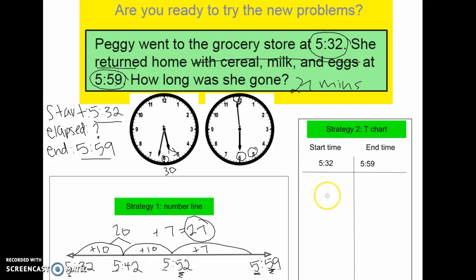Here is another strategy called a t-chart. So what we're going to do here is put our start time and our end time, and I'm trying to get from 5:32 to 5:59. So again, I'm going to break it down and count up in smaller chunks. So first I'm adding 10 minutes, and that 10 minutes will take me to 5:42. So I'm adding 10 minutes to 5:32 up here, my start time. I haven't reached my end time, 5:59, so I'm going to go ahead and add 10 more minutes.